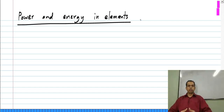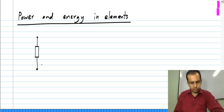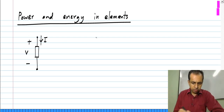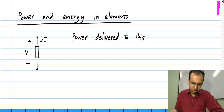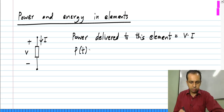First, I will discuss power and energy in general and then look at what happens in the particular elements that we know. If we have a two-terminal element, we will define the voltage and current according to passive sign convention — that is, we take the current as going into the terminal which is defined as positive for the voltage. The power delivered to this element equals V times I. V and I could be time-varying; that does not change the definition — it simply means that the power delivered will be a function of time.